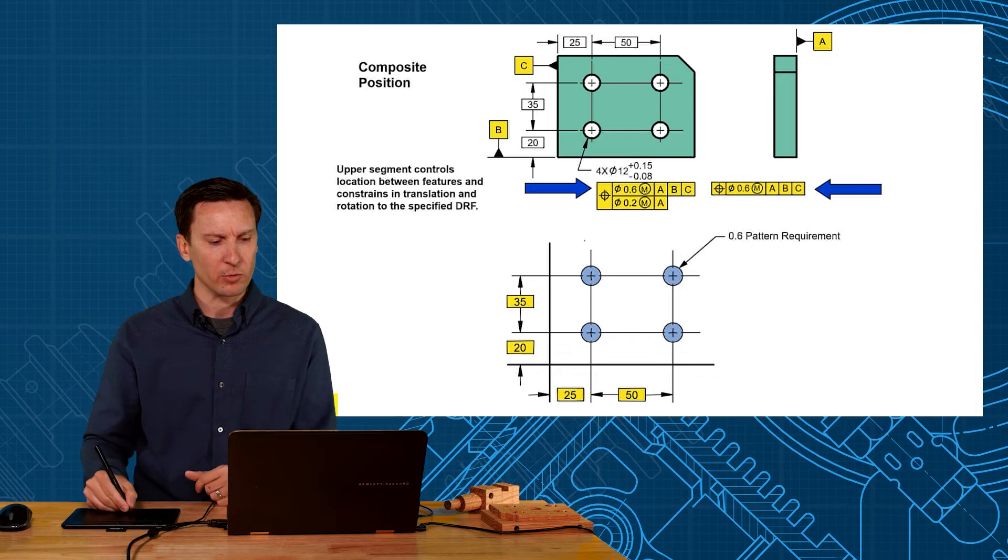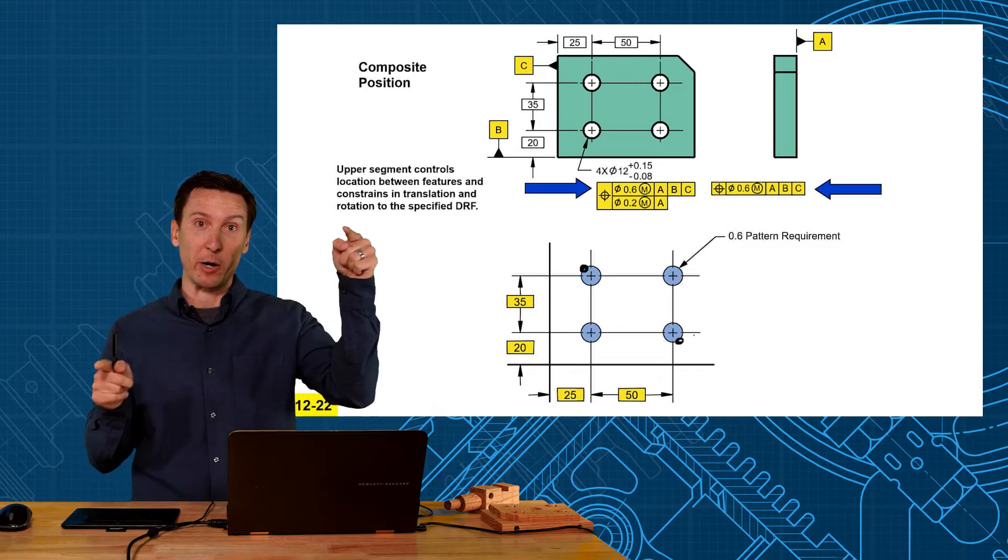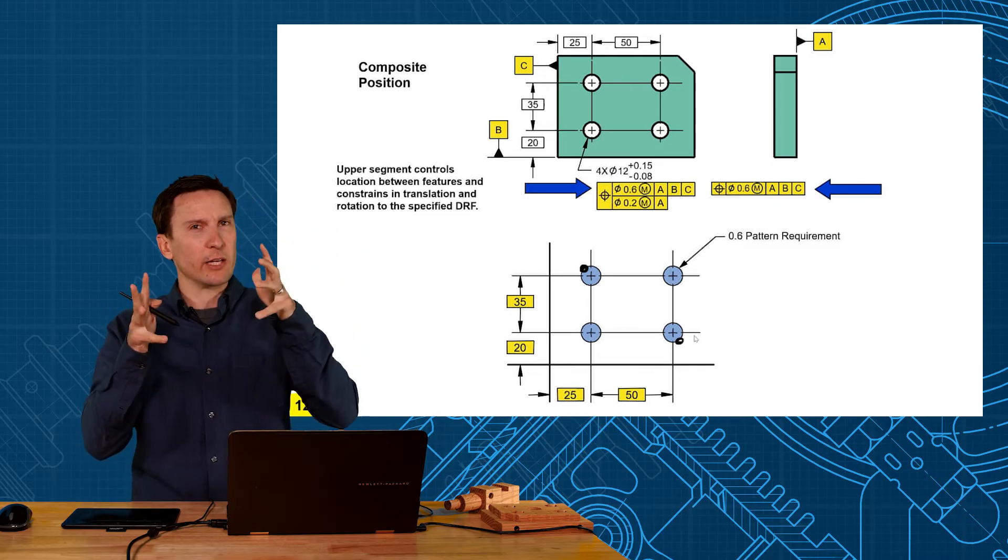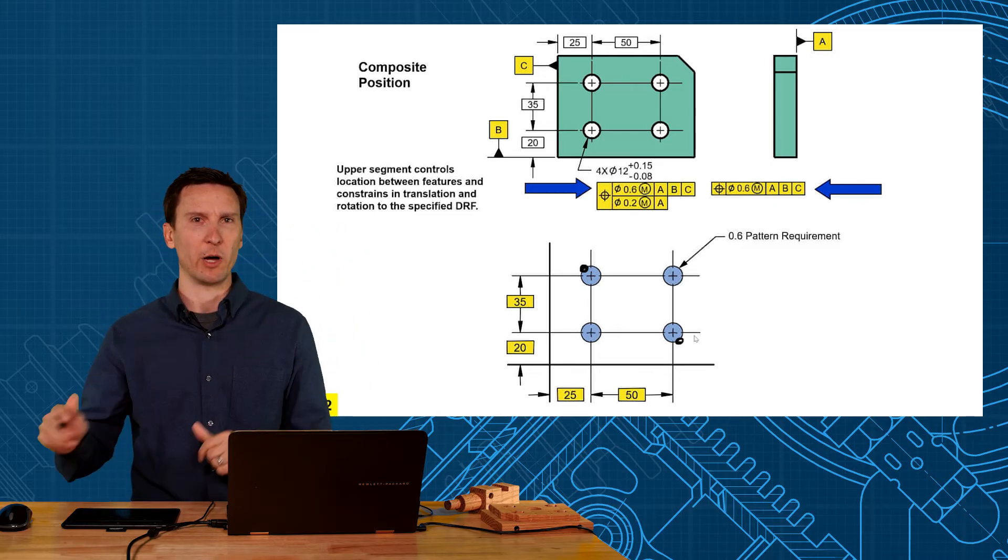I draw four cylindrical zones right on the true position and the axes have to lie within these tolerance zones. But what that also means is one hole could shoot this way and the other hole could shoot this way, and they could spread apart from each other.